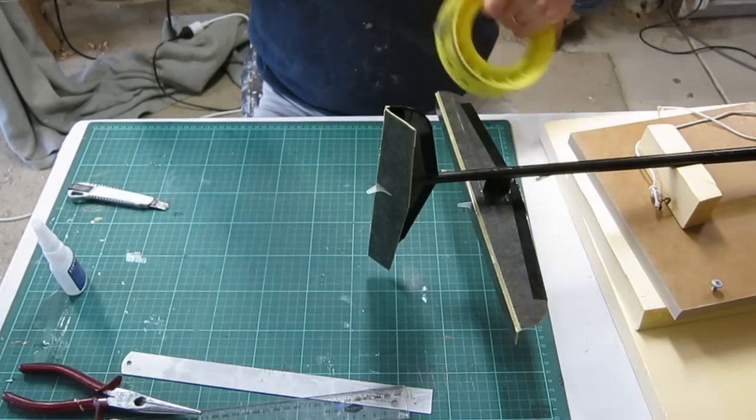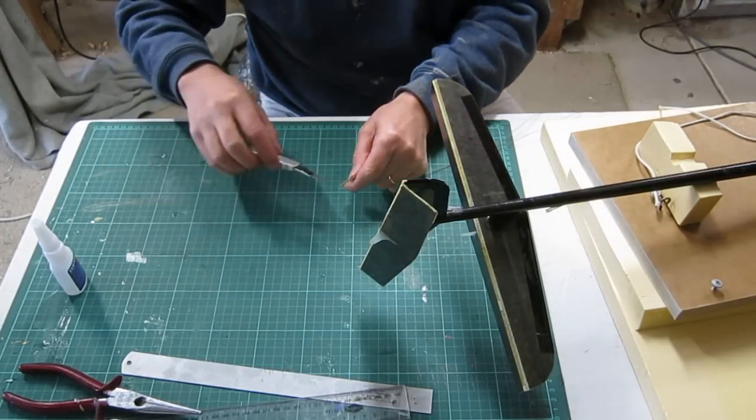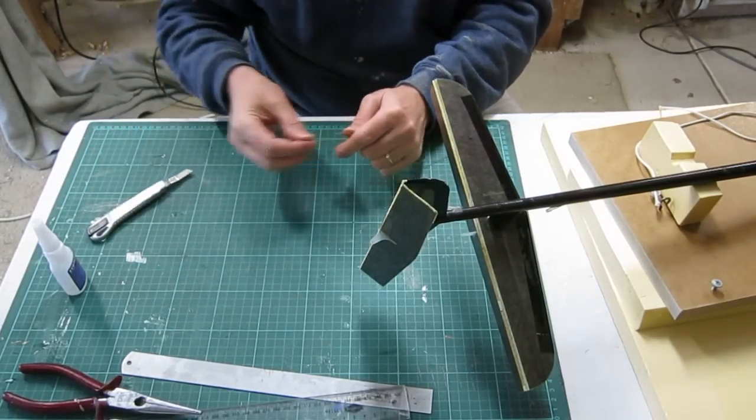For the pull line, I'm using Kevlar kite string. You can use any non-stretch line like Spectra or Dacron, whatever you can find.